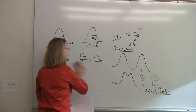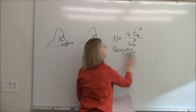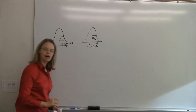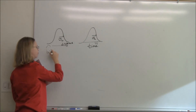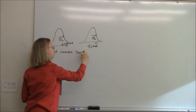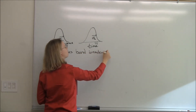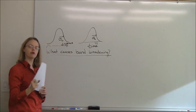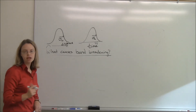We talked about the fact that peaks are a little wide. Why are peaks wide? What causes band broadening — why are peaks not narrow little bands? There are really three answers, and they come into the terms of an equation.